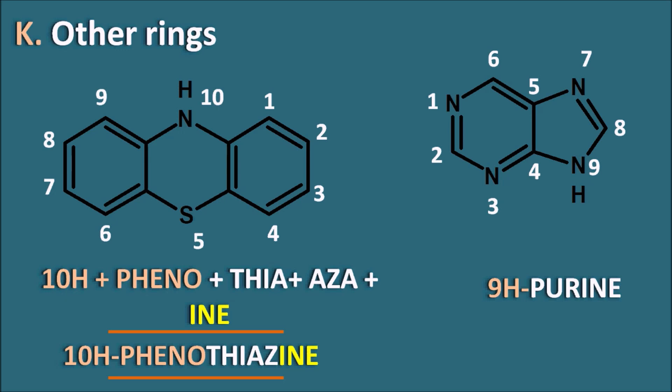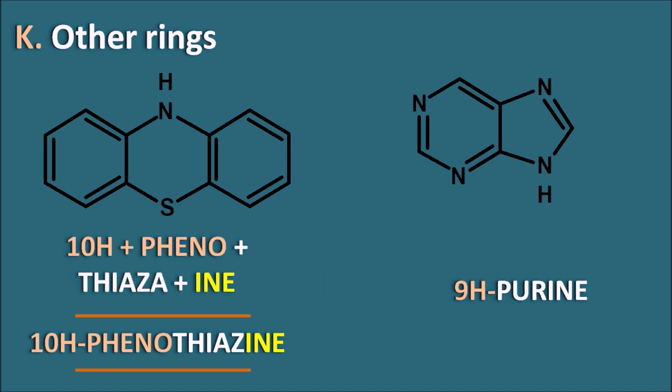In this way, we can have many heterocyclic ring systems. In many of them we can remember the name using logic, prefixes, and suffixes, or by comparing rings with other rings. That's about the nomenclature and numbering of heterocyclic ring systems. Please subscribe to our channel, click the bell notification, share this video with your friends, and post your comments. Thank you for watching.